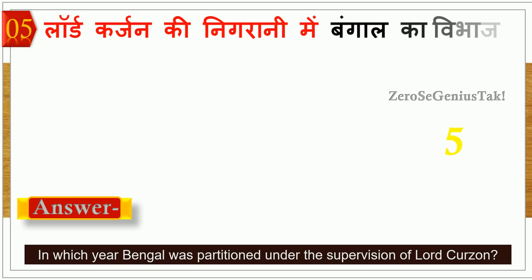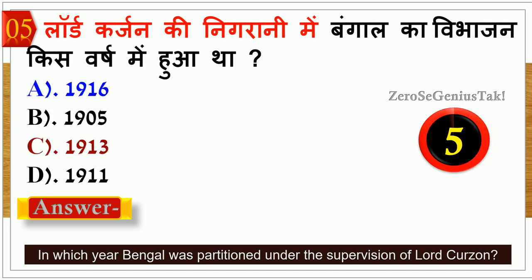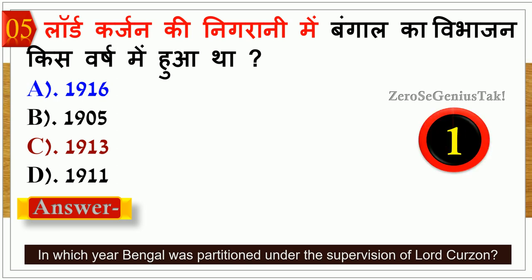Lord Curzon की निगरानी में बंगाल का विभाजन किस वर्ष में हुआ था? इसका सही जवाब है option number B — 1905 में।